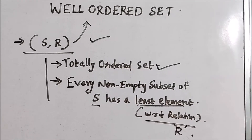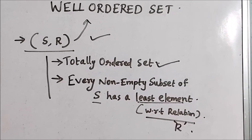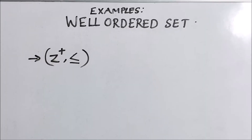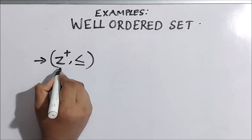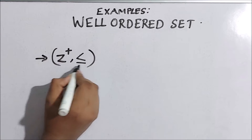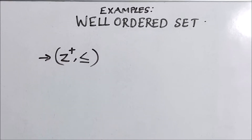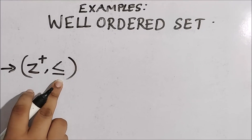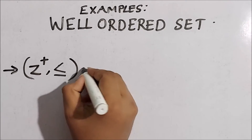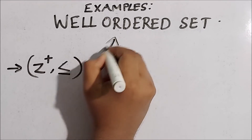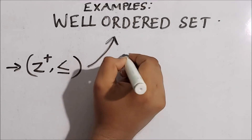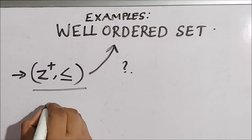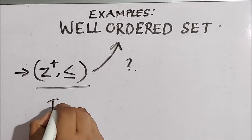We will see some examples of well-ordered sets, then we will understand it more clearly. Consider the set of positive integers together with the less than or equal to relation — whether that is a well-ordered set or not. First of all, we have to understand that this is a totally ordered set.